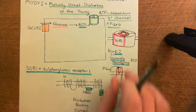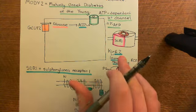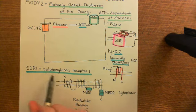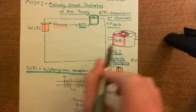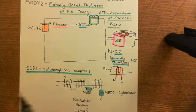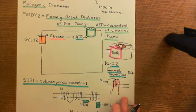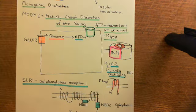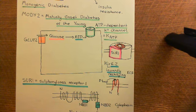The sulfonylurea drugs are going to bind to these receptors and cause the channel to close just like ATP would. ATP causes this ATP-dependent potassium channel to close. What is the effect of that? Well, it causes depolarization of the electrical potential difference across the cell membrane of the beta cell.